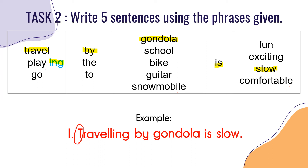Now it's your turn to write five sentences using the phrases given. Use all five words from the third box: gondola, school, bike, guitar, and snowmobile. Good luck!